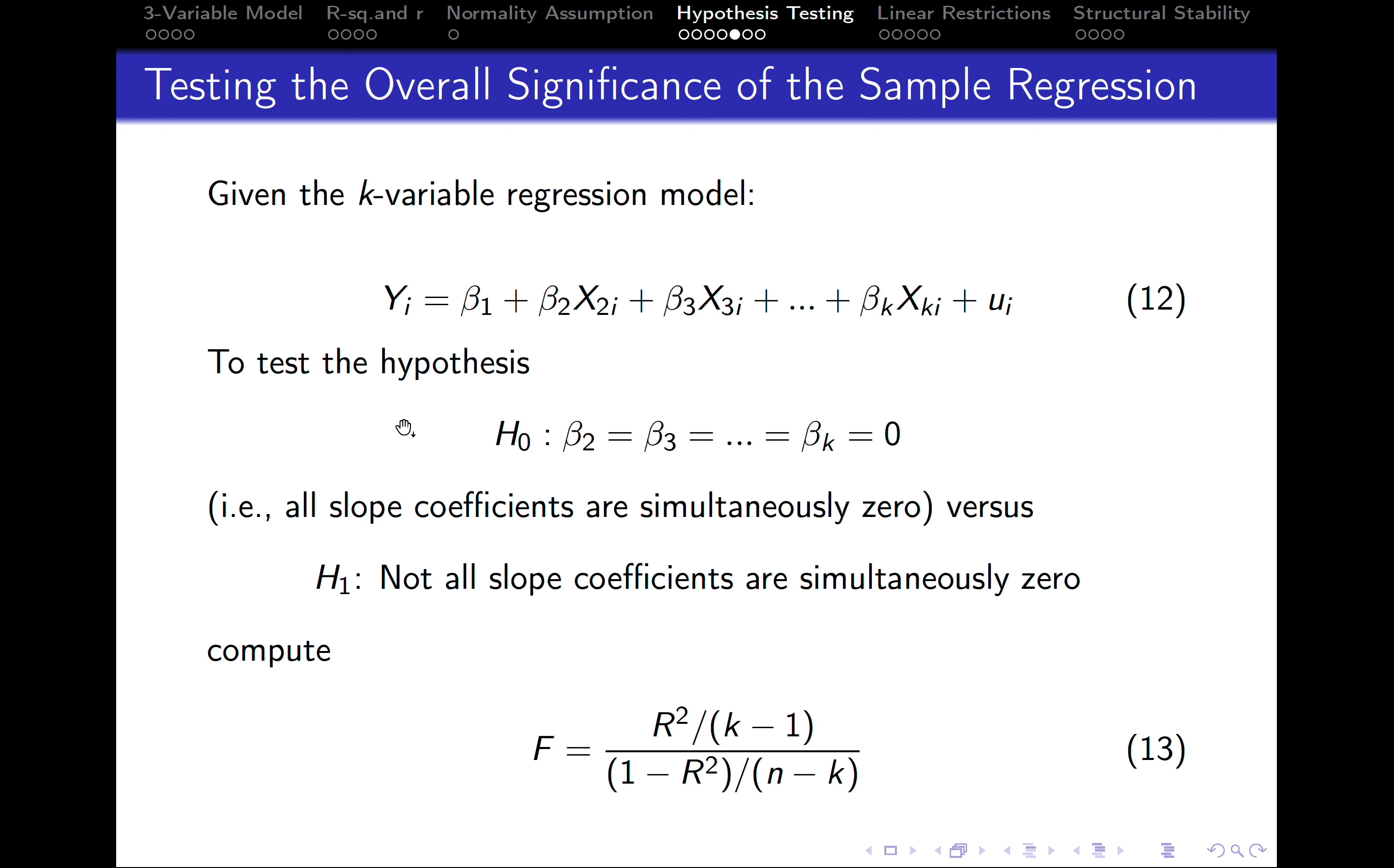And we would like to test the hypothesis that the slope coefficients beta 2, beta 3, and all the way to beta k are simultaneously equal to zero. And we test this hypothesis against the alternative hypothesis that not all slope coefficients are simultaneously zero.